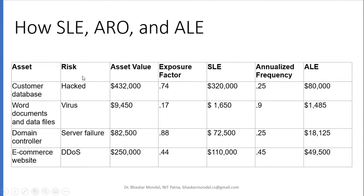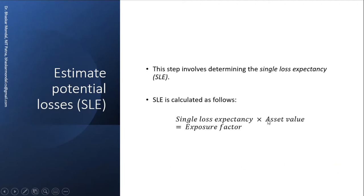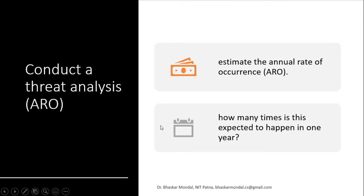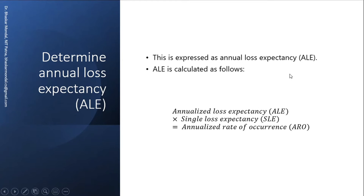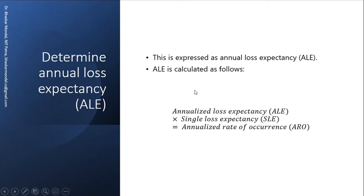Going to the next slide, you will find a table with asset listed here, risk listed here, asset value, exposure factor — that means how much it is exposed over the internet — then SLE, then annualized frequency — that means how many times the attack is going to happen — and then ALE, which is Annual Loss Expectancy.